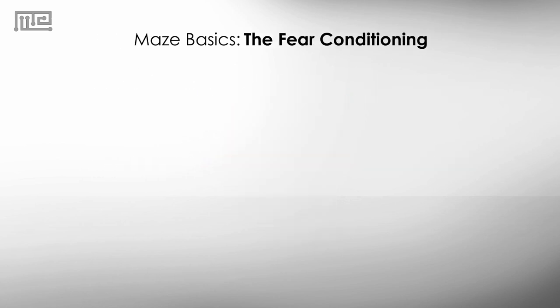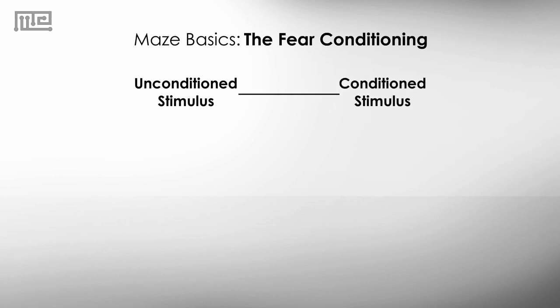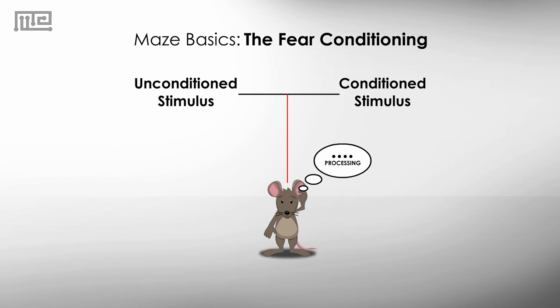Fear conditioning is a specific form of associative learning that pairs an unpleasant unconditioned stimulus to a neutral conditioned stimulus. After the animal associates the two stimuli, it will react to the neutral conditioned stimulus alone in the same way as if it were reacting to the unconditioned stimulus.